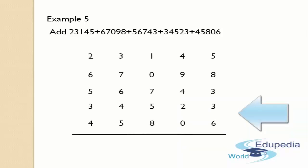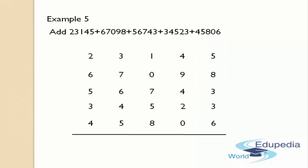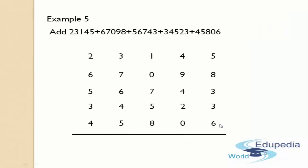After setting these numbers, we have to start adding the digits from the rightmost column, which are in the ones place. Now let us start adding the digits in the first column, that is from the ones place. Here 6 plus 3 you will get 9, and 9 plus 3 you will get 12.